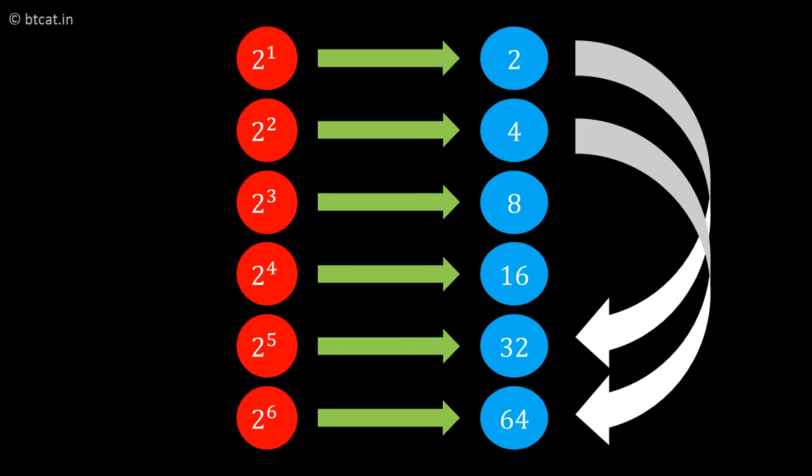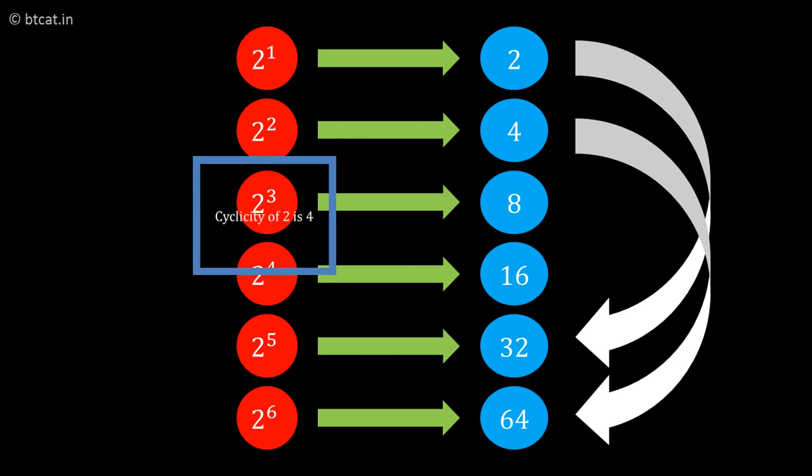The pattern goes 2, 4, 8, 6, 2, 4, 8, 6, and so on. We define the cyclicity of 2 as 4 because after every 4 powers the last digit repeats. This is the concept of cyclicity - every number has some cycle.